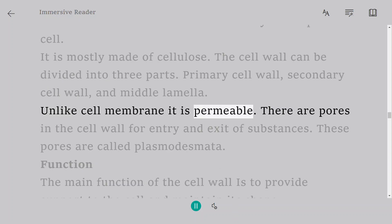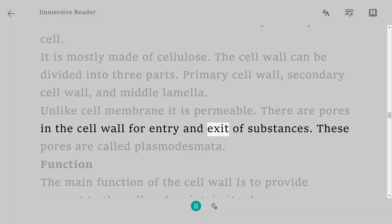Unlike cell membrane it is permeable. There are pores in the cell wall for entry and exit of substances. These pores are called plasmidesmata.